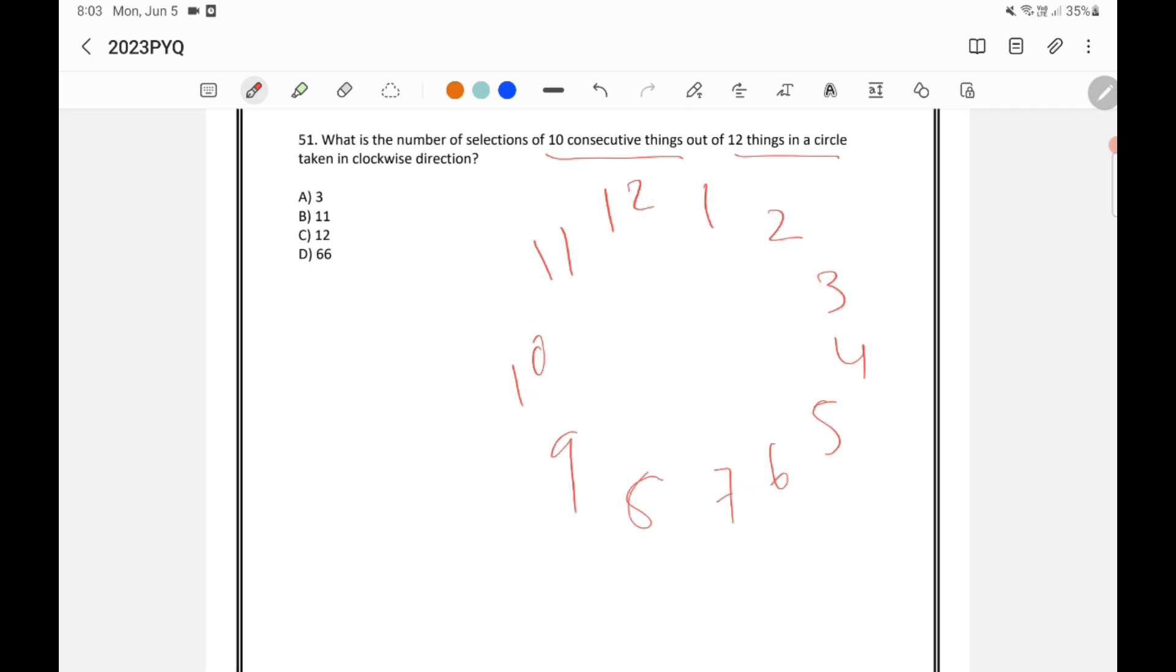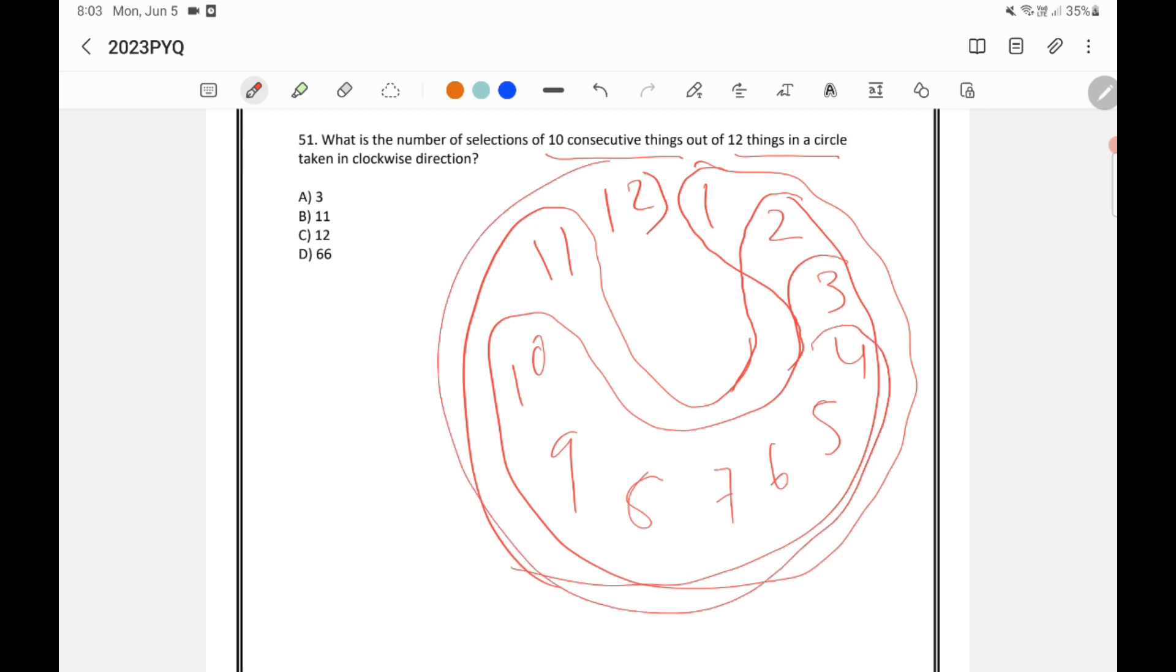So now in how many ways we can select 10 consecutive things. So we can select like this. These are 10 consecutive things. This is one possibility. Now if I start from 2, and end till 11, this is another possibility. If I start from 3 and ending in 12, this is another possibility. If I start from 4 ending in 1, this is in this way, there are many possibilities.